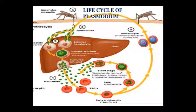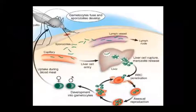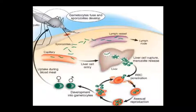Intermediate host means the asexual cycle runs in humans and the sexual cycle in the mosquito. The gametocytes are fused, sporozoites are developed. Asexual reproduction occurs in blood cells in the human, and sporogony produces sporozoites in the mosquito.